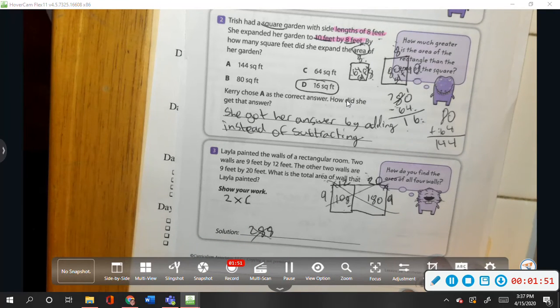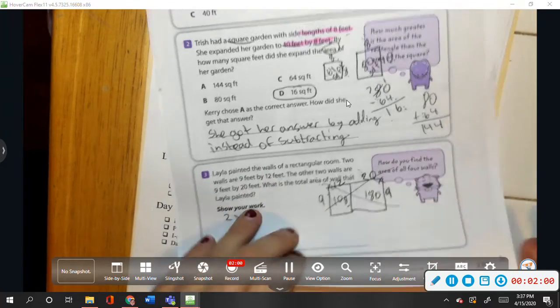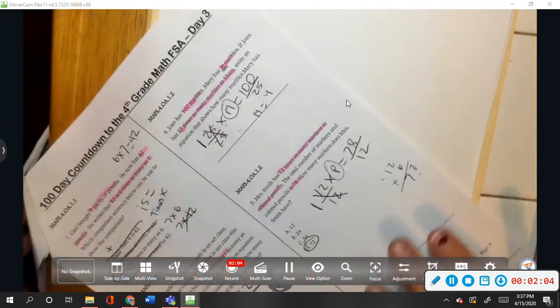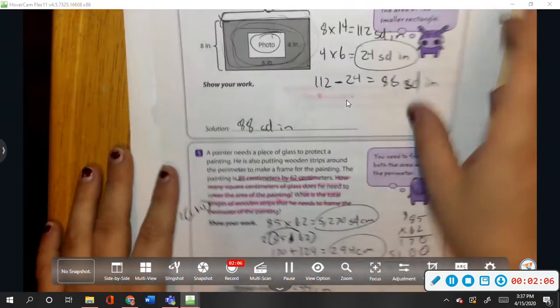If you ended up with, this is number three, 576 square feet, I want to know how you got that.